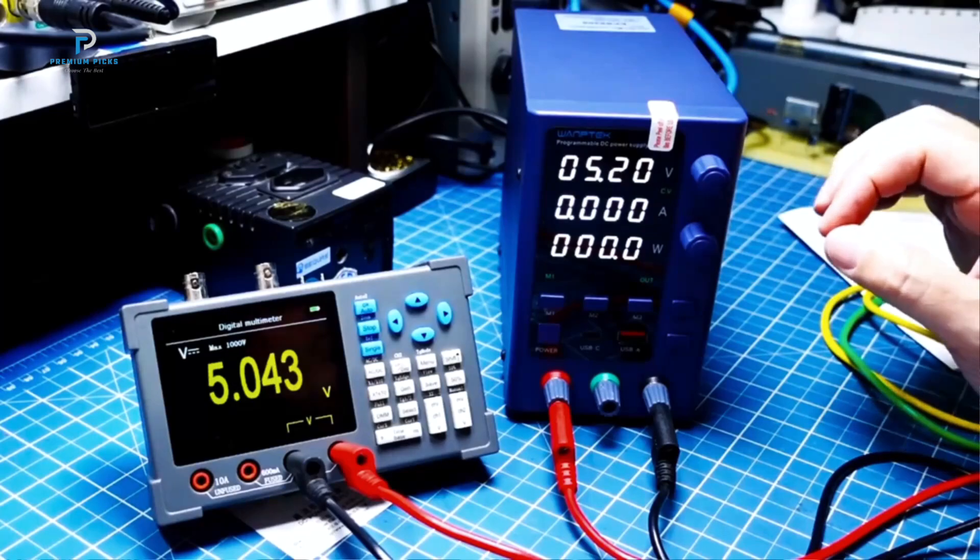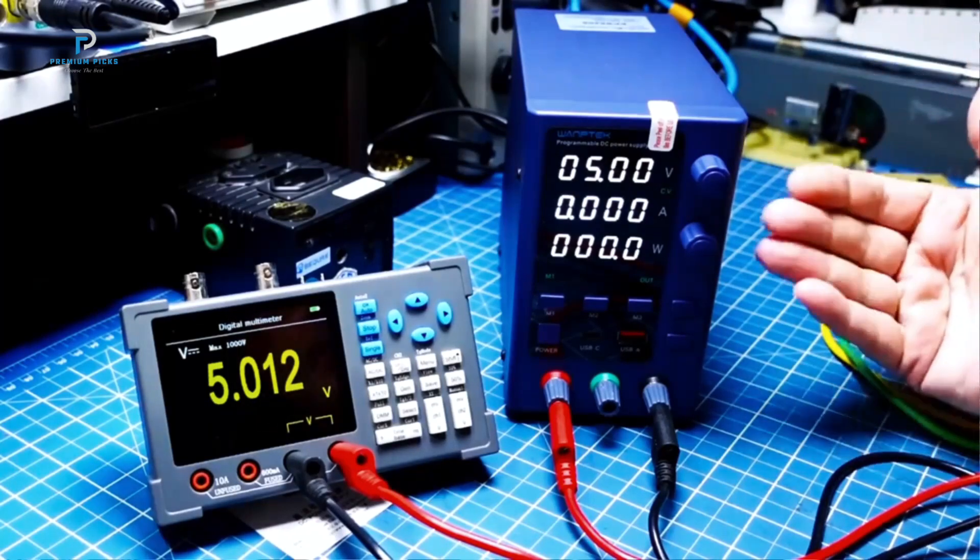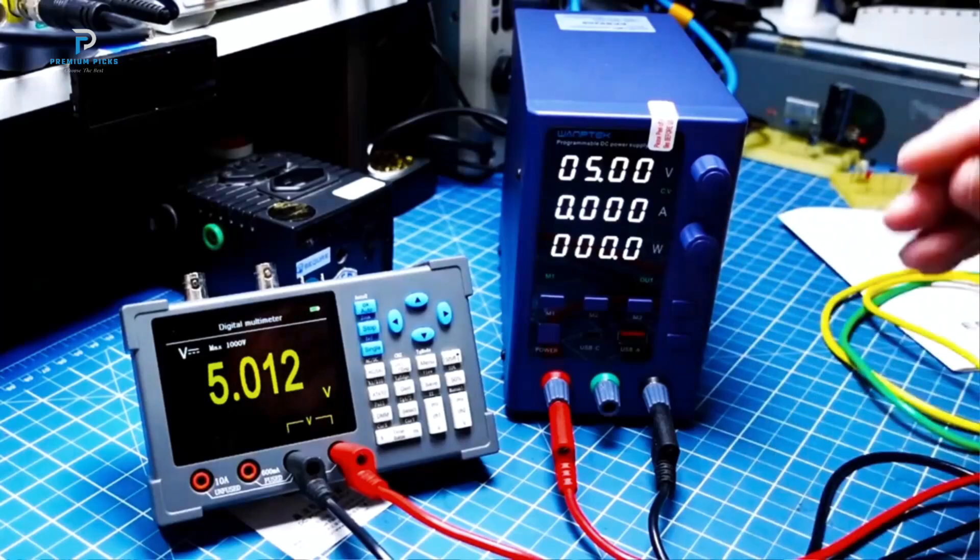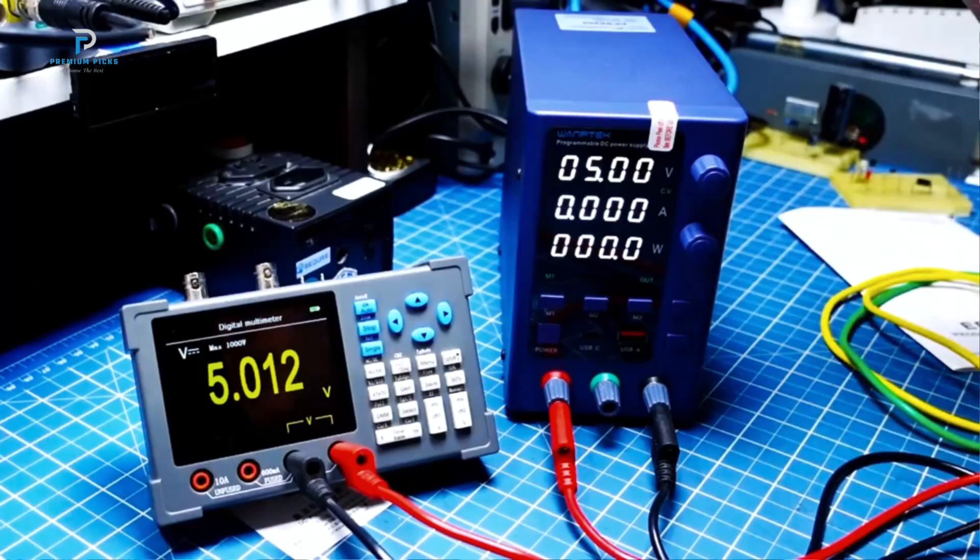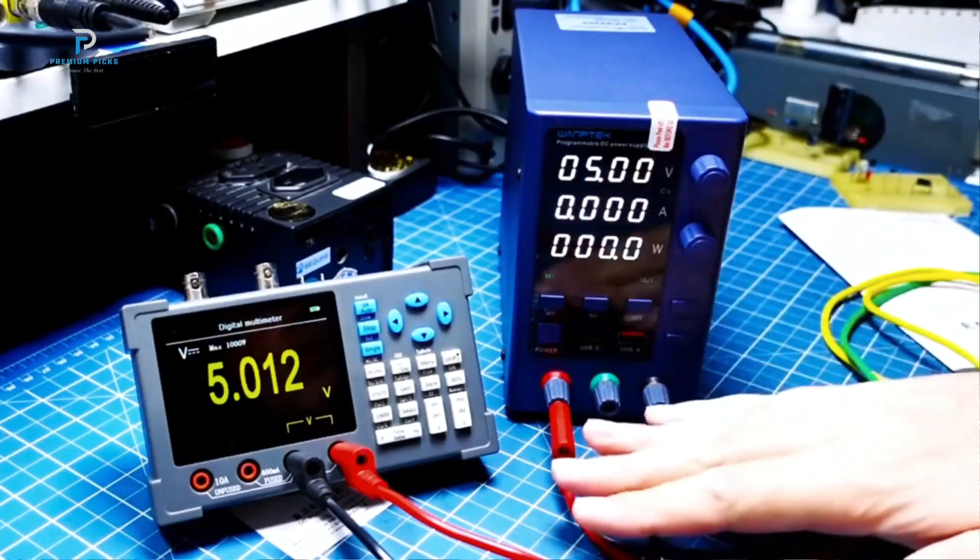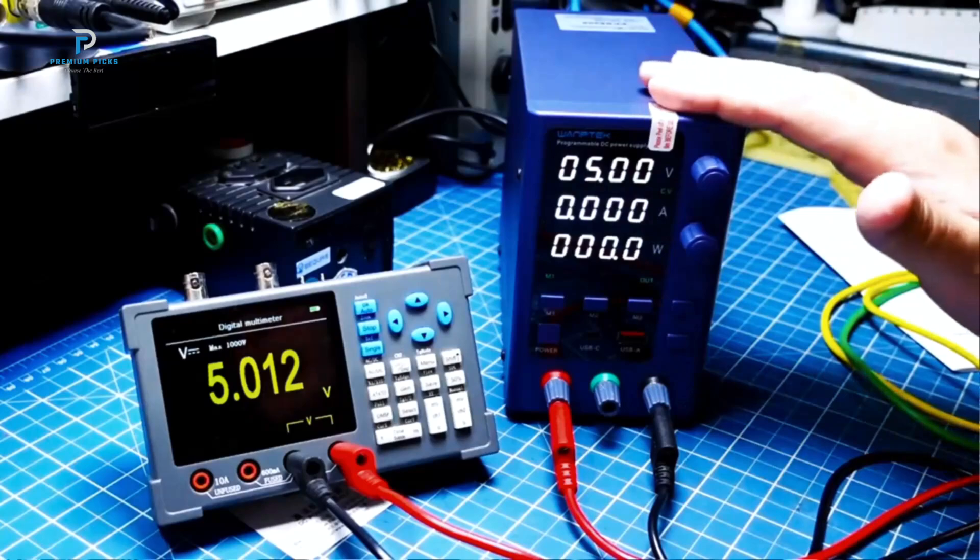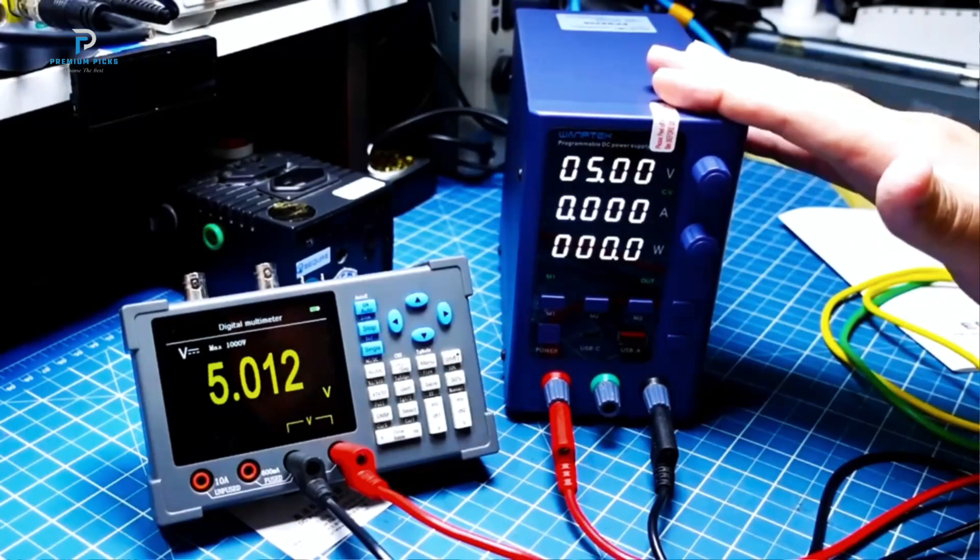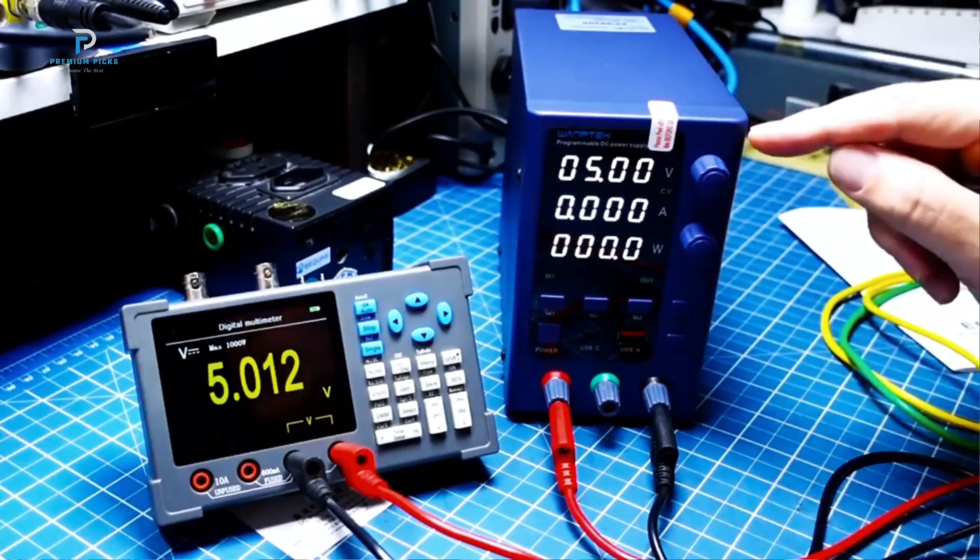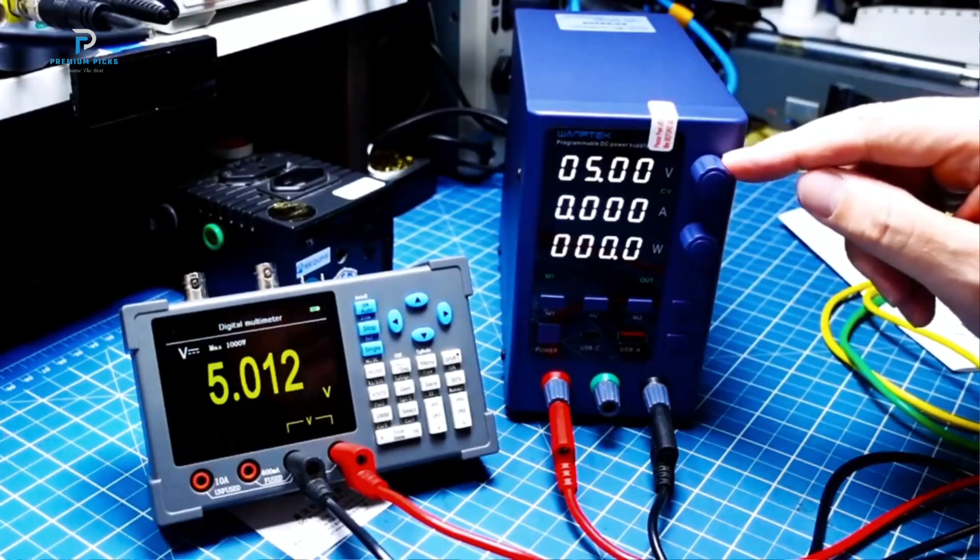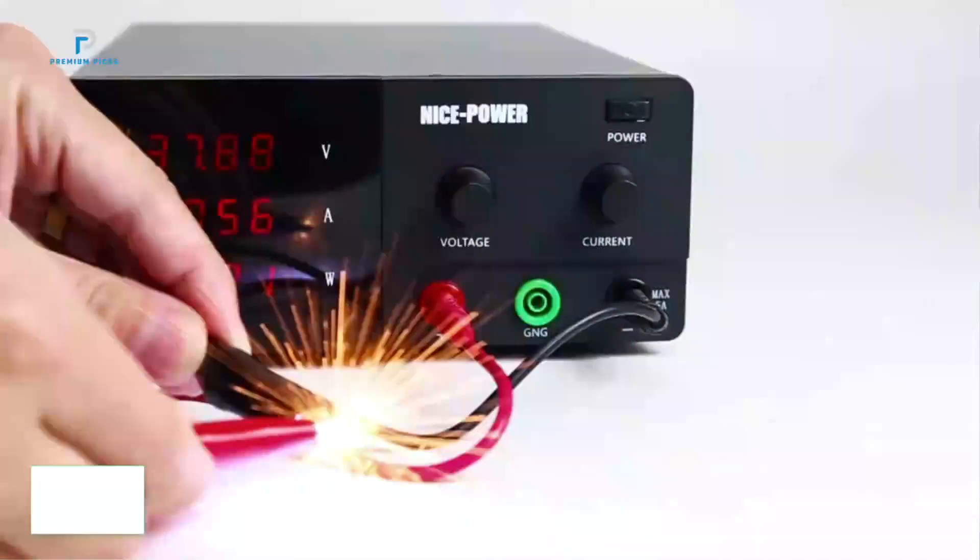One of the highlights of this Womptek model is the encoder adjustment. This feature allows for smooth and highly precise voltage and current control, offering users the ability to make fine adjustments with ease. Coupled with its high-precision LED display, users can quickly and accurately monitor voltage, current, and power readings, ensuring that projects are executed with utmost precision. The clear display adds a layer of control that's vital for delicate electronic work or lab testing. What sets the Womptek apart is its memory storage function.